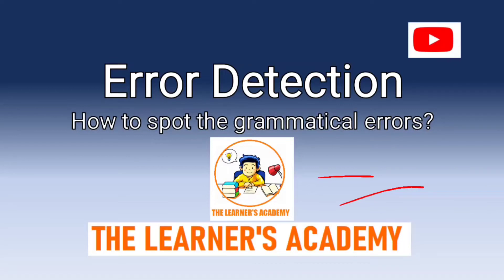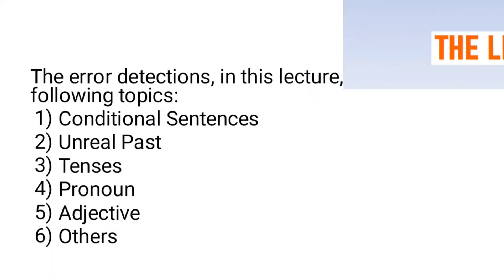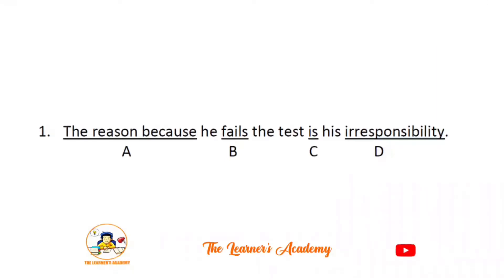Number one: The reason because he fails the test is his irresponsibility. Option A has an error. Either use 'the reason' or use 'because' - not both together. The correct sentence is: The reason he fails the test is his irresponsibility. So option A has the error because 'because' should not be used.